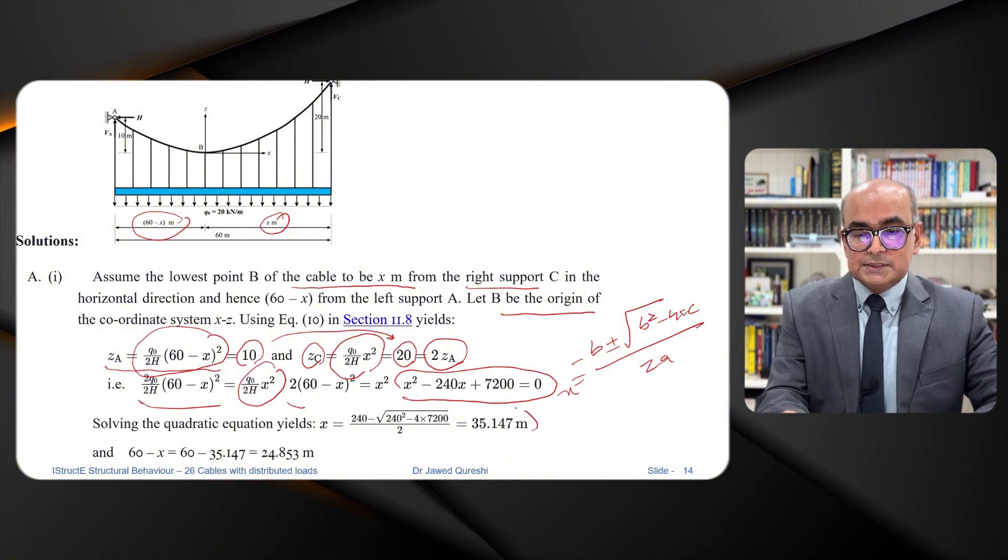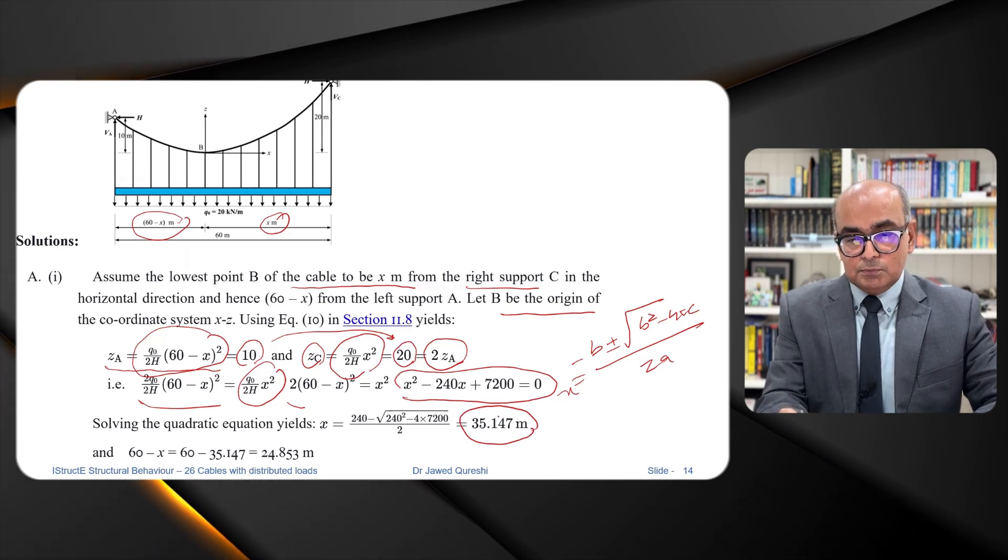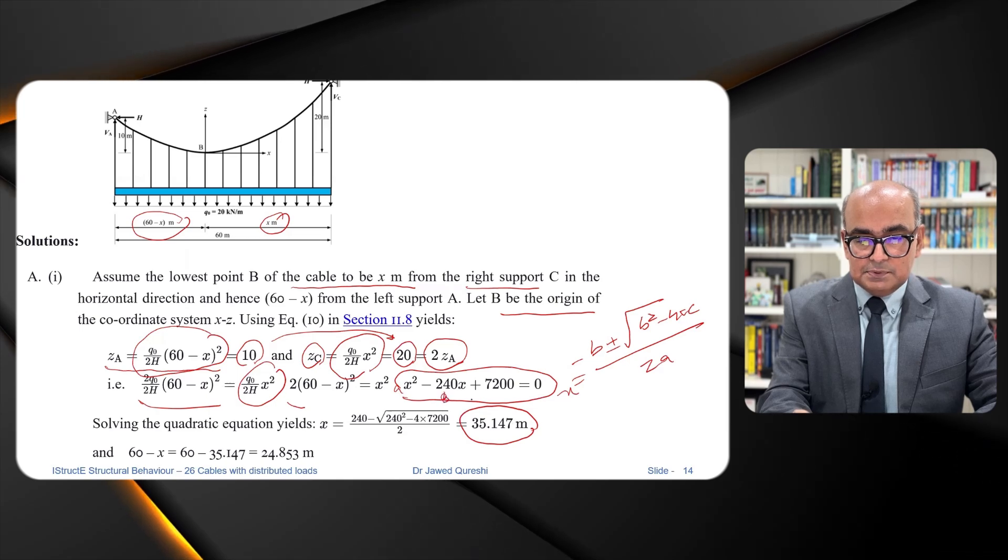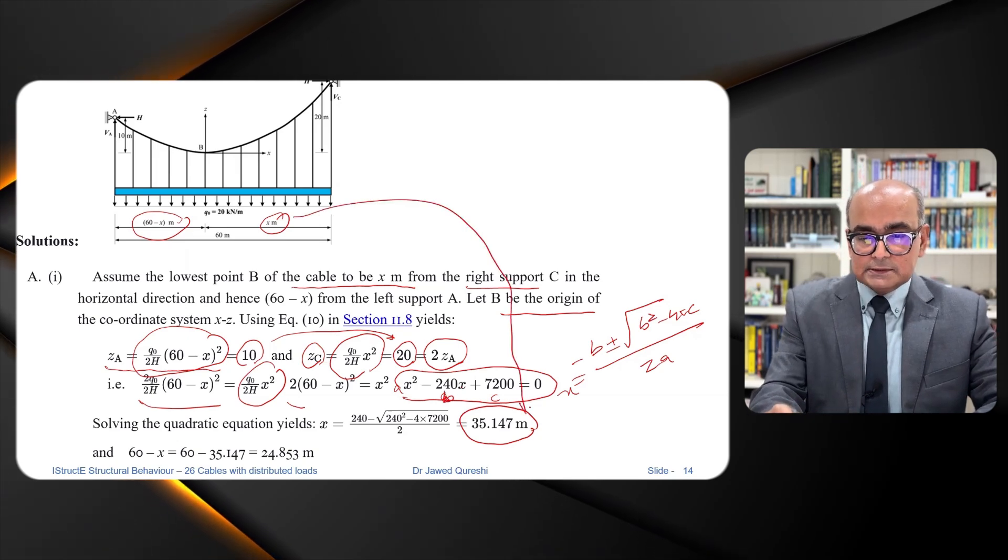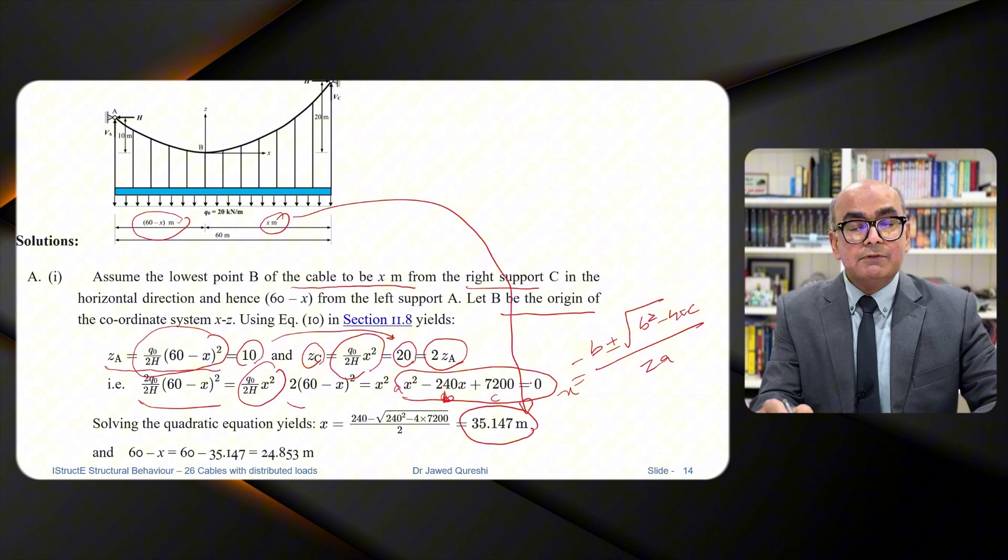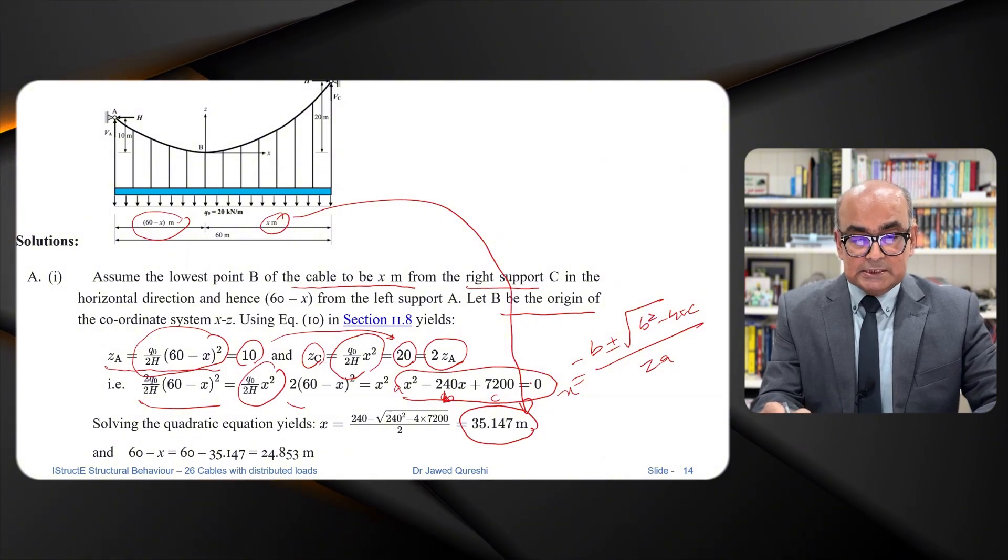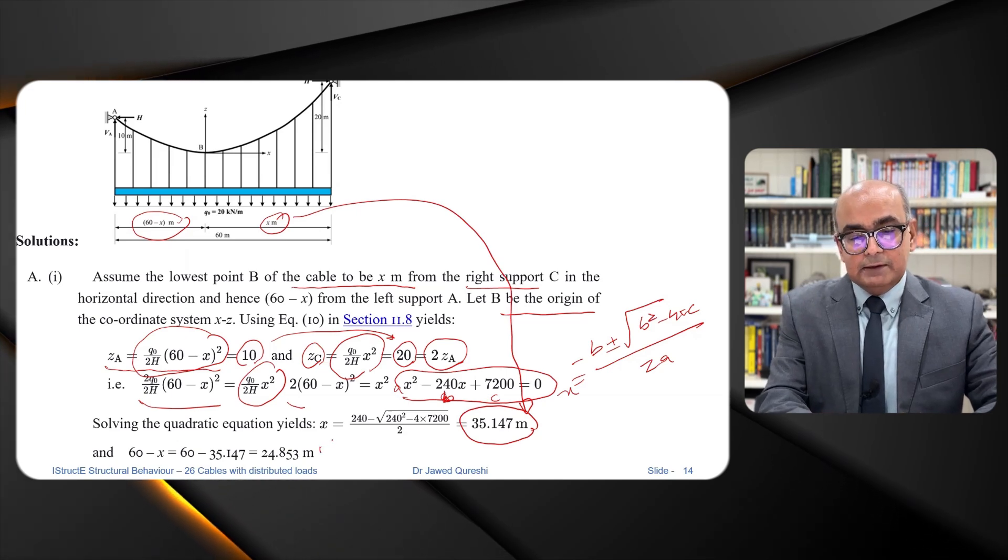So now we have value of X that is 35.147. We will take away this value from 60 and this will give us value of the left side. So once these values are found out, the next thing will be to find out the horizontal reaction.